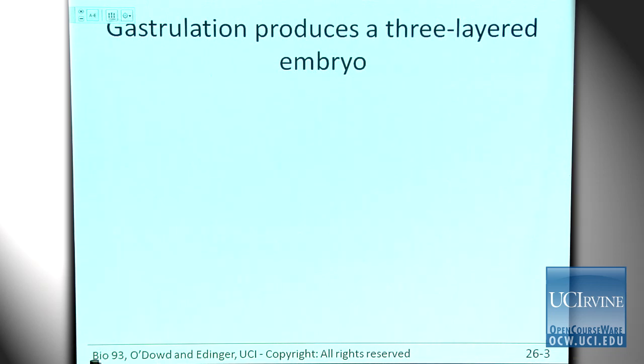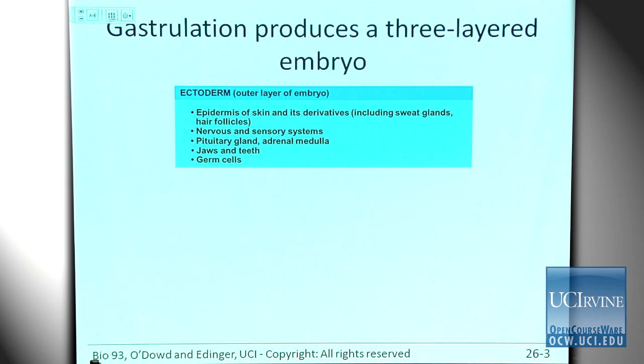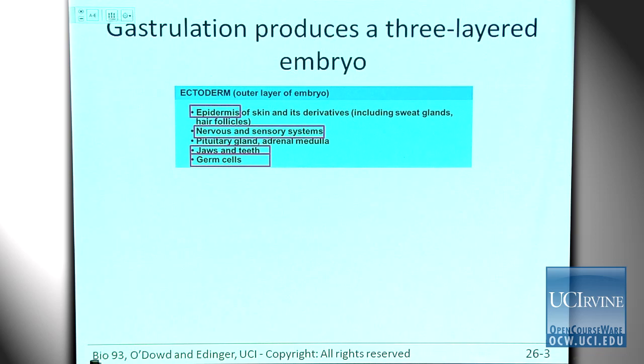During gastrulation, you're going to create a three-layered embryo. The first germ layer is the ectoderm — 'ecto' means outside. These cells on the outside of the embryo will eventually become the epidermis of your skin, nervous tissue, sensory tissue, jaws, teeth, and germ cells. I want you to remember which structures come from which germ layer — this is something you'll need to know later in your career in cell biology.